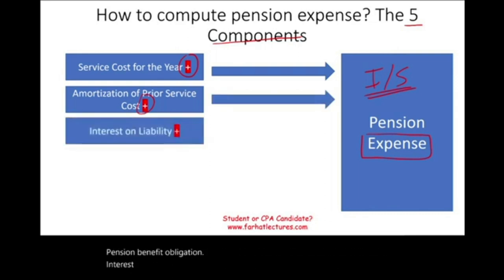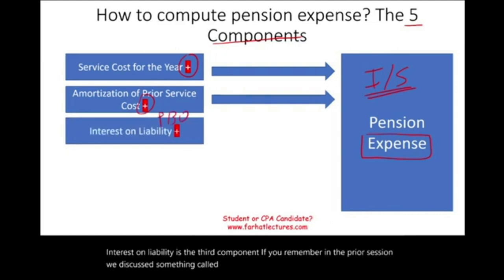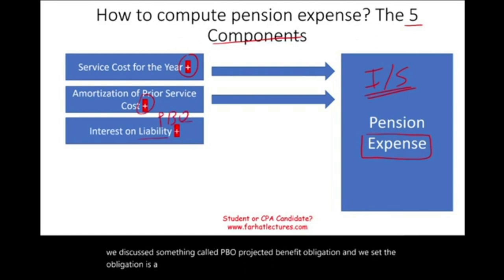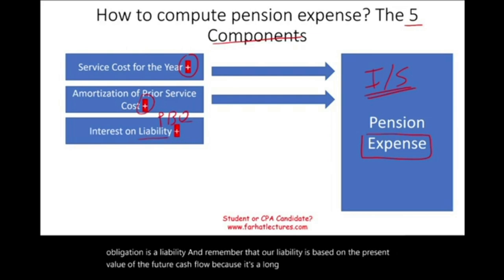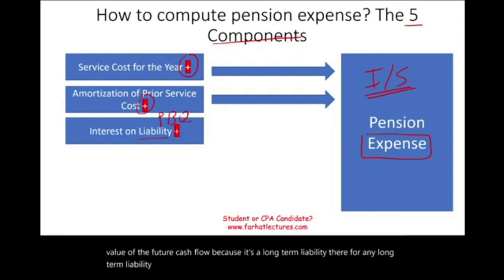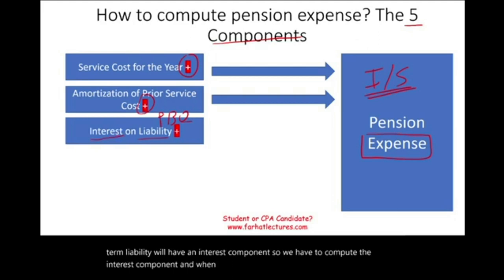Interest on liability is the third component. From the prior session, we discussed the PBO — projected benefit obligation — and we said the obligation is a liability based on the present value of future cash flows because it's a long-term liability. Therefore, any long-term liability will have an interest component, and when we compute that interest component, it's going to increase our pension expense.